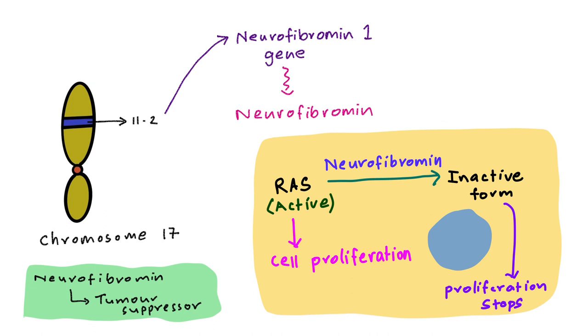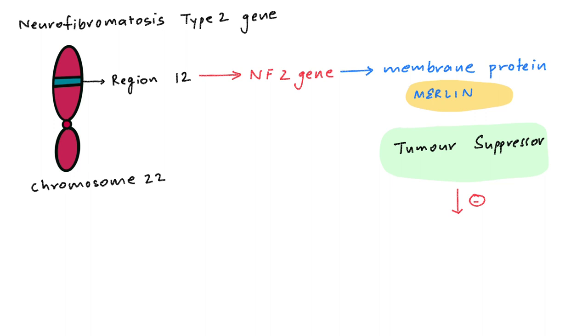Neurofibromatosis type 2 gene is located on the long arm of chromosome 22, in a region called band 12. Band 12 codes for the neurofibromin 2 gene, which produces the membrane protein merlin. Just like neurofibromin, merlin is a tumor suppressor protein. Merlin inhibits the PI3 kinase pathway and mTOR pathway, thus stopping cell proliferation.